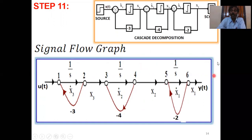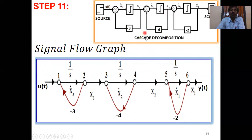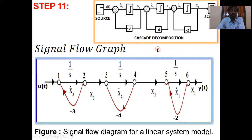Converting the state diagram (block diagram) to a signal flow graph for cascade decomposition: the input is u(t) and the final output is y(t) = x1. There are six nodes. Feedback branches: node 2 to node 1 with gain −3 (first loop), node 4 to node 3 with gain −4 (second loop), and node 6 to node 5 with gain −2 (third loop). This is the signal flow graph for cascade decomposition.